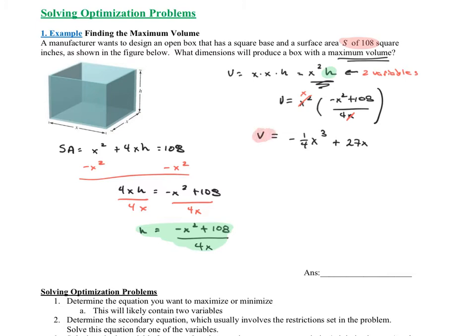How do I find a maximum? I can use the first derivative or the second derivative test, but I need to find the derivative first. The derivative of volume is negative three-fourths x squared plus 27. To find the critical values, I set it equal to zero — it's never undefined, so I don't need to worry about that. Subtracting 27 from both sides gives negative three-fourths x squared equals negative 27.